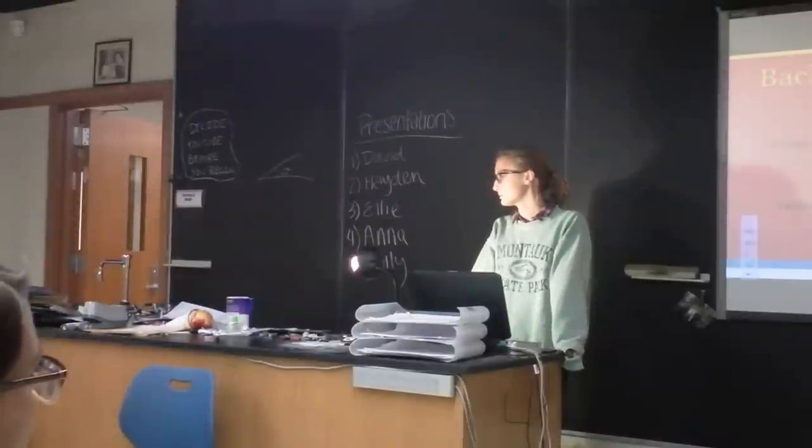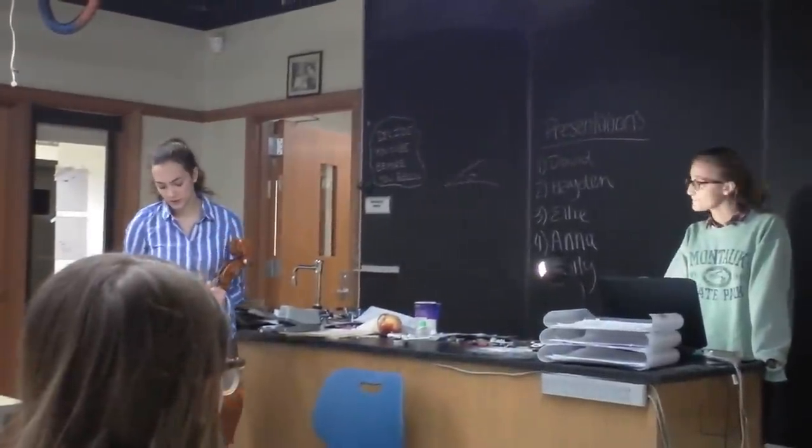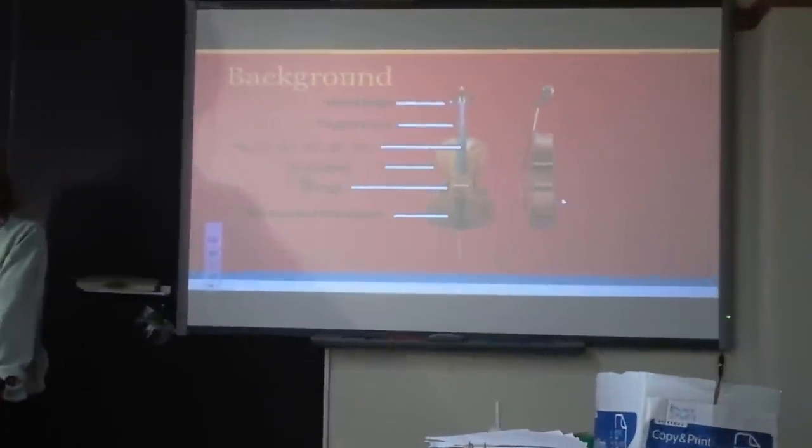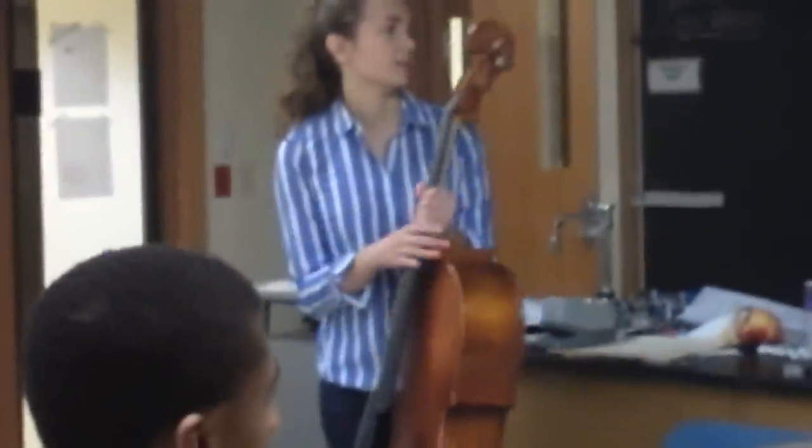So first just a little bit about the different parts of the cellos. We have the tuning pegs here with tuning strings. We have four different strings, A, D, G, and C. And then this part is the resonating body. And we have the bridge here and then the fine tuners and the tailpiece.